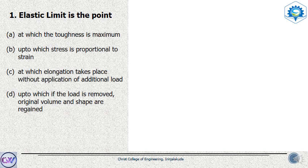Option A: at which the toughness is maximum. Option B: up to which stress is proportional to strain. Option C: at which elongation takes place without application of additional load. Option D: up to which if the load is removed, original volume and shape are regained.